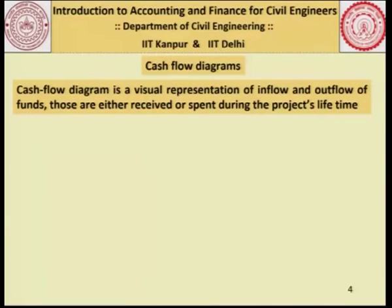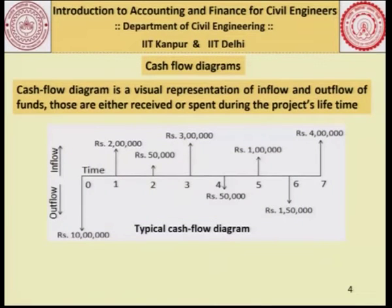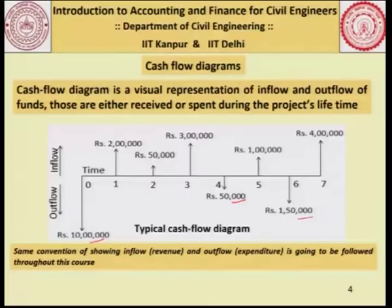Let us take another look at the cash flow diagrams. A cash flow diagram is a visual representation of inflow and outflow of funds received or spent during a project's lifetime. Here is another example where 10 lakh, 50,000, and 1,50,000 are spent at different points in time with certain amounts of revenue. What we are trying to understand is how to make a comparison between this cash flow and another cash flow which may have different inflow and outflow patterns, following the same convention of plotting on the top and bottom halves of the time axis.